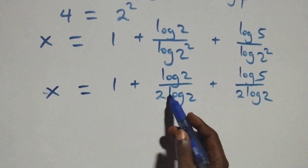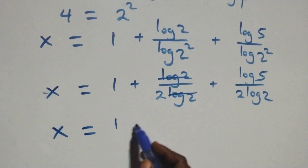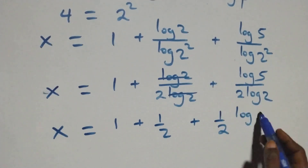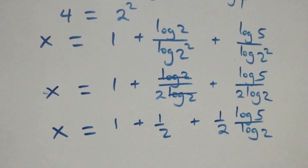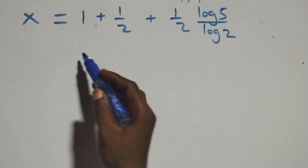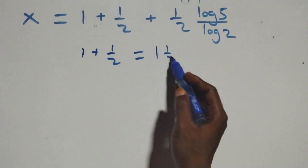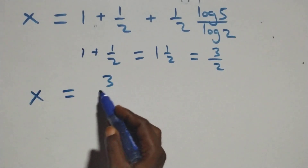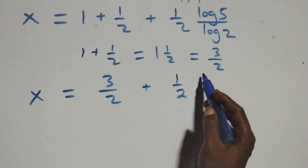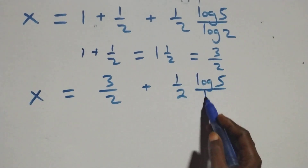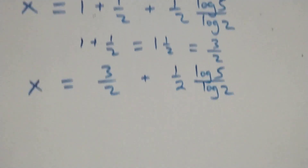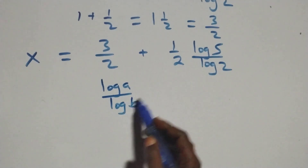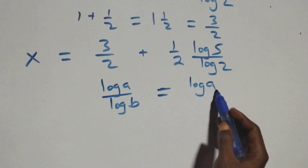Here log 2 cancels each other and this becomes x equals to 1 plus 1 over 2, plus 1 over 2 times (log 5 over log 2). Then we can express 1 plus 1 over 2 as 3 over 2. Then we apply a change of base: when we have log a over log b, it is the same thing as log a to base b. So x equals to 3 over 2 plus 1 over 2 times log₂5.